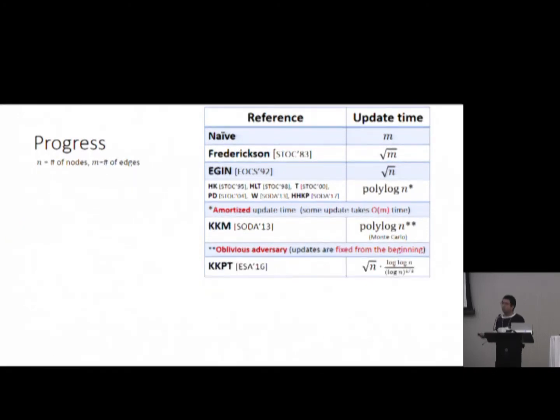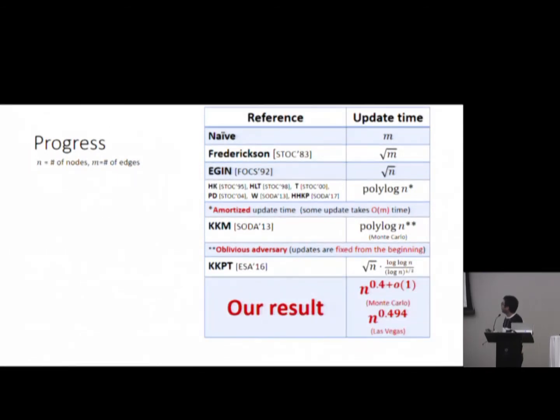So that's why people come back to the question when you want worst case, not amortized, and you want the algorithm to work against non-oblivious adversary. People can improve it. This is by Kejlberg-Rasmussen et al., and they improved this to something better than square root n. And the question is, can we improve it further by polynomial factor, even using randomization? And this is what we do.